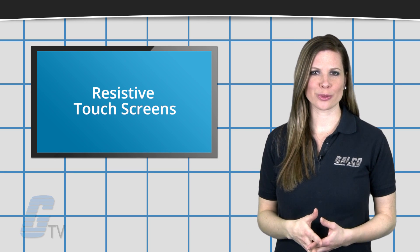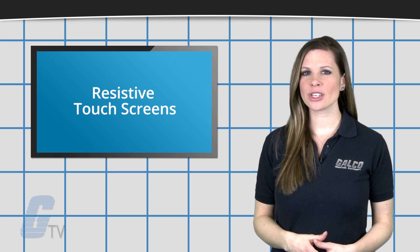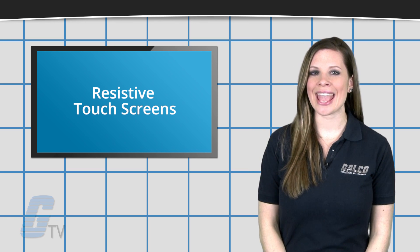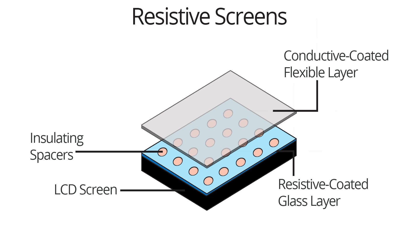Resistive touch screens use two flexible sheets of material that have an electrically resistive coating with a gap separating the two sheets. Voltage travels across the two sheets, with one of them detecting the horizontal location of the touch and the other detecting the vertical orientation of the point of contact.